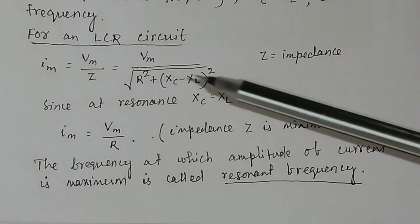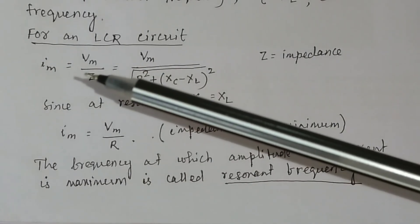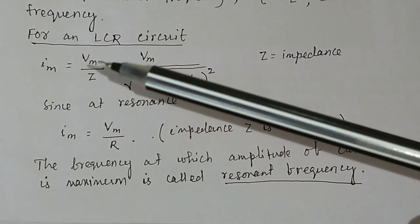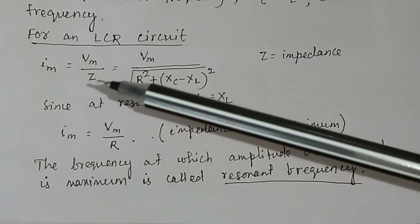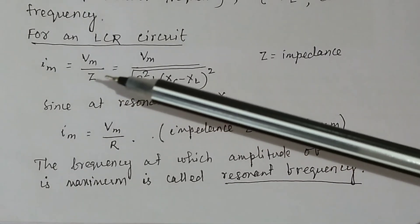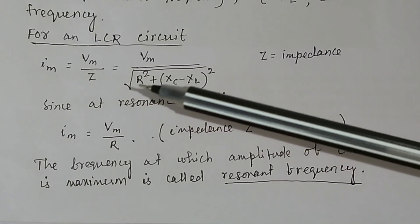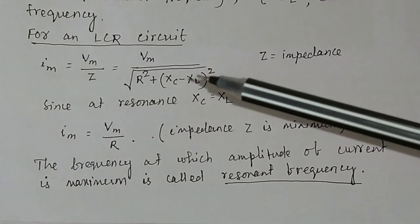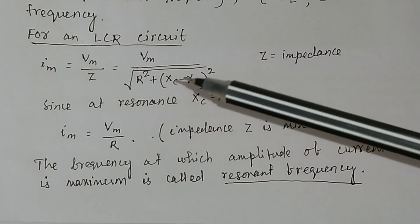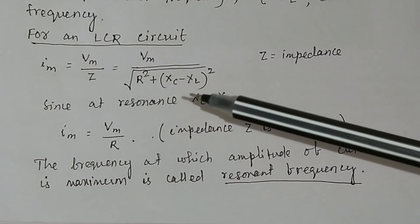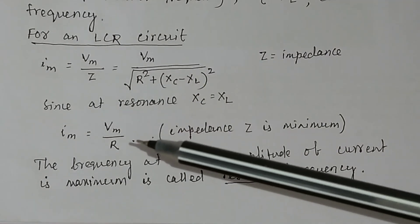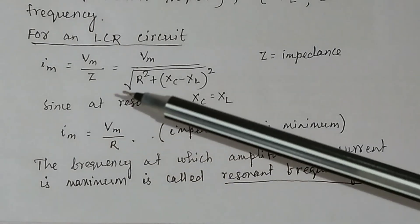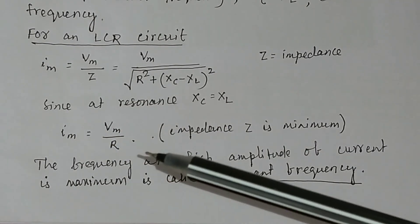For the LCR circuit, the maximum current I_m equals the maximum voltage V_m divided by impedance Z. Impedance Z equals the square root of R squared plus (Xc minus XL) squared. At resonance, Xc equals XL, so I_m equals V_m divided by R. This shows that impedance Z is minimum at resonance.